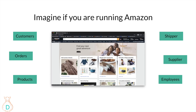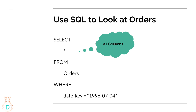If you're running Amazon as a platform, you might have data like a customers table, orders table, and products table. If you specifically want to look at the orders table, you should always filter down to one date first, because in Excel you might have a few hundred thousand rows, but in a database you have millions of rows.